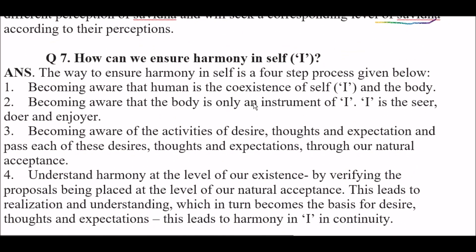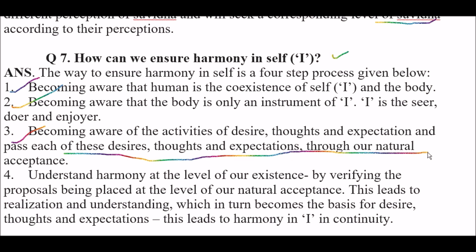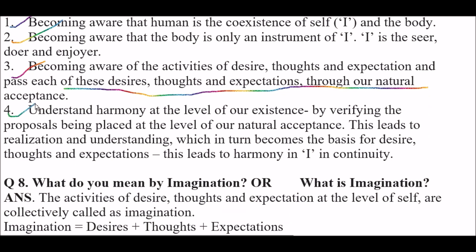How can we ensure harmony in self? The way to ensure harmony in self is a four-step process. First: becoming aware that a human is the co-existence of self (I) and the body. Second: becoming aware that the body is only an instrument of I — I is the seer, doer, and enjoyer. Third: becoming aware of the activities of desire, thoughts, and expectation, and passing each of these through our natural acceptance. Fourth and last: understand harmony at the level of our existence by verifying the proposals placed at the level of our natural acceptance.